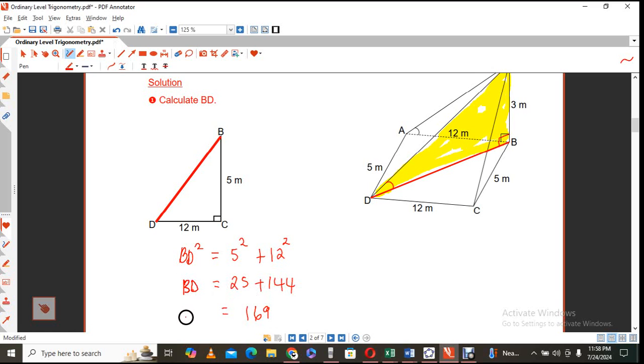So you'll be saying BD square is the hypotenuse they're looking for. Is equal to the sum of the squares of the two shorter sides. And you can actually go ahead and calculate this one. So this is 25 plus 144. So that gives you 169. So BD, BD square. So therefore BD will equal to the square root of that. Which makes that to be 13. So now that is 13.